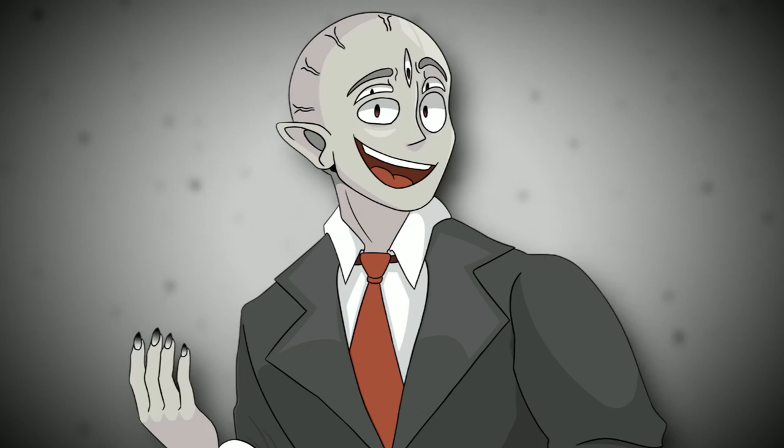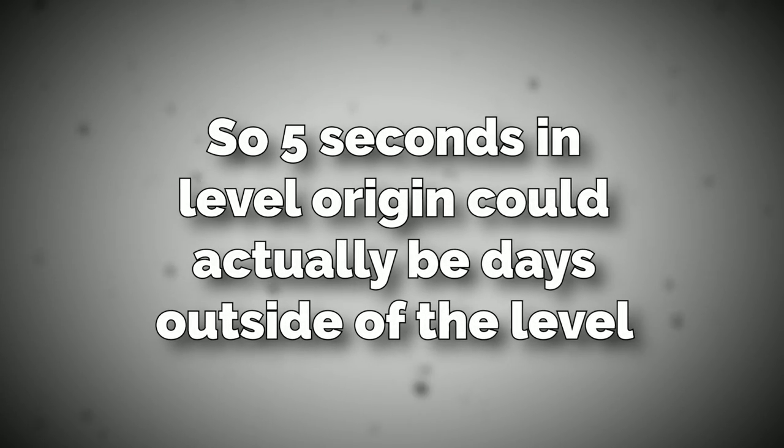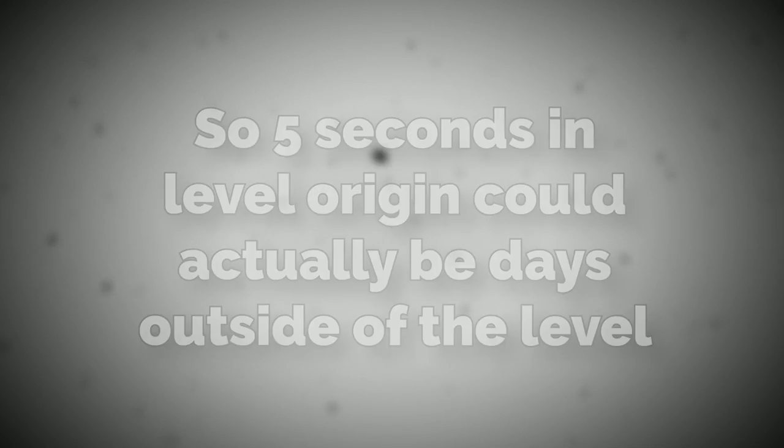Other than the constant stream of things glitching in and out of this area, there's thought to be one single very smart entity that looks over the level and controls it all in some way. And this entity seemingly changes how time itself works. So five seconds in level origin could actually be days outside of the level.